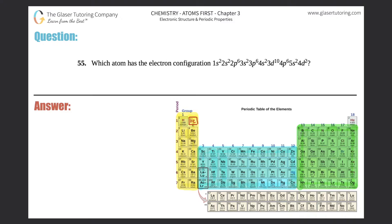Number 55. Which atom has the electron configuration 1s2, 2s2, 2p6, 3s2, 3p6, 4s2, 3d10, 4p6, 5s2, 4d2?